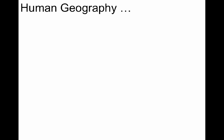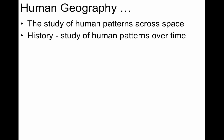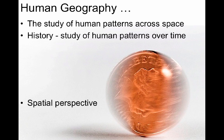The most basic definition I can give is that geography is the study of human patterns across space. This is separate from physical geography, which deals with patterns and processes of the natural environment. This definition is connected to history, which is the study of human patterns over time. In essence, geography and history are two sides of the same coin. The spatial perspective is paramount in geography.